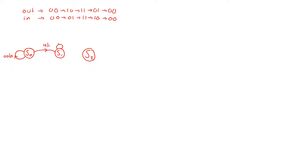We need to stay in S1 as long as the first lion is crossing the passage, so we stay for inputs 10, 11, 01, and also 00 when one lion is in the enclosure and one is in the cage. But this means for all possible inputs we are stuck in state S1. When the second lion wants to pass and we get 10, we remain in S1, so we cannot solve the problem this way.